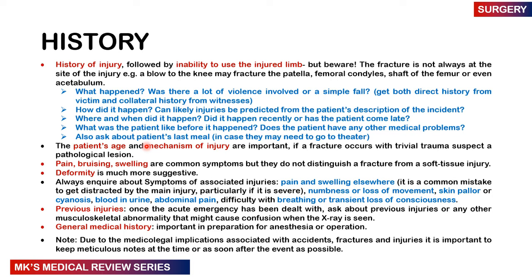Symptoms of pain, bruising, and swelling are common but you can't distinguish from soft tissue injury without imaging. Deformity is more suggestive of a fracture. Always inquire about associated injuries elsewhere — it's easy to be distracted by the main injury and miss something like a pneumothorax. Ask about numbness, loss of movement, skin pallor, cyanosis, blood in the urine, abdominal pain, breathing difficulties, or transient loss of consciousness. Ask about previous injuries and get a full general medical history, especially for preparing patients for anesthesia. Document meticulously due to medical-legal implications.